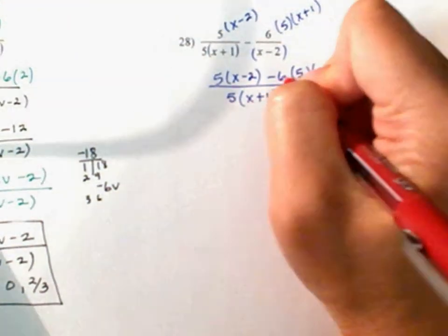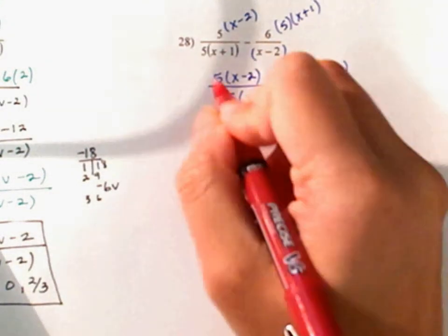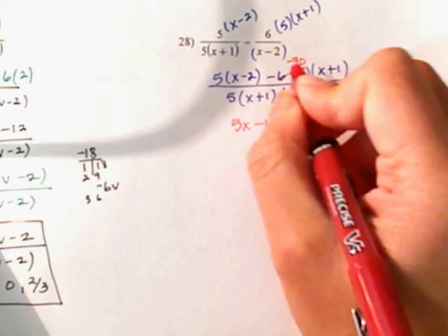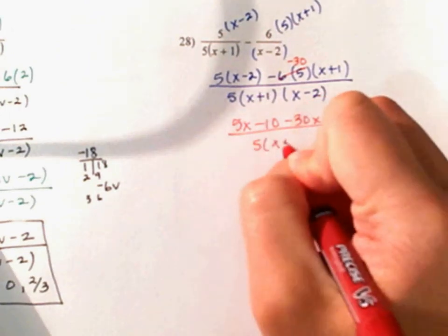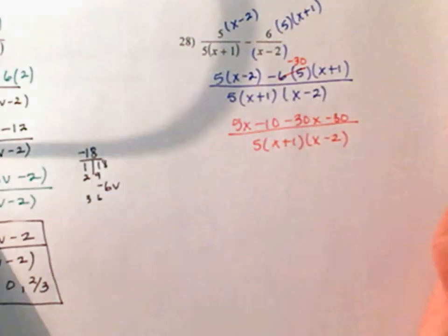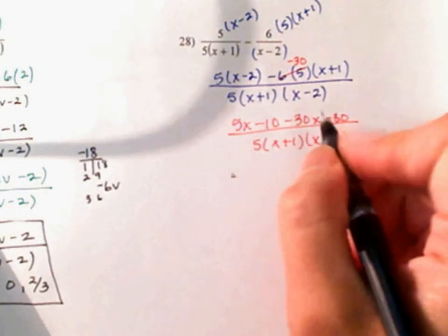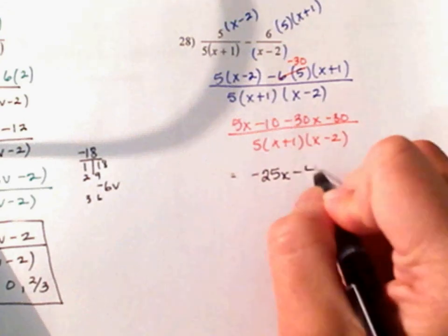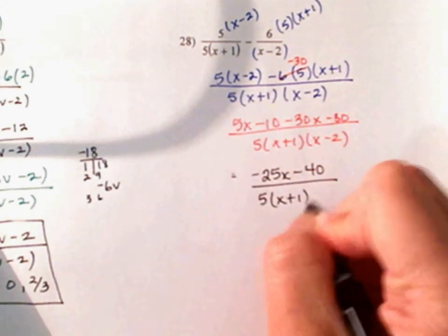This here gives you negative 30. 5 times x is 5x. 5 times negative 2 is negative 10. Negative 30 times x is negative 30x. Negative 30 times 1 is negative 30. All of that over 5 times x plus 1 times x minus 2. Do not distribute because you're trying to simplify. Next step — combine your like terms. 5x minus 30x is negative 25x. Negative 10 minus 30 is negative 40. All of that over 5 times x plus 1 times x minus 2.